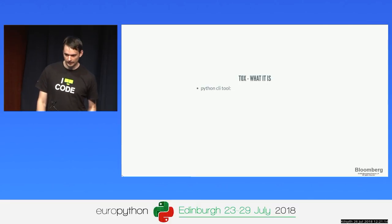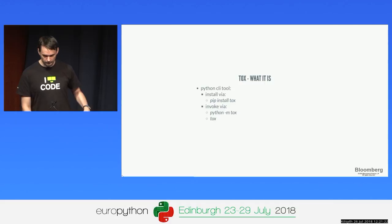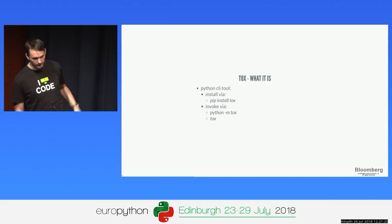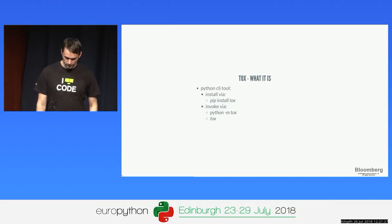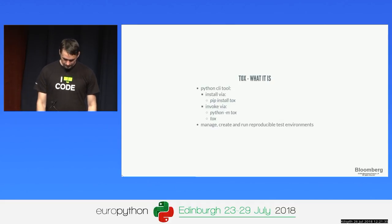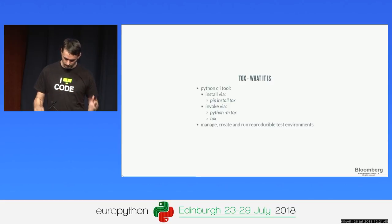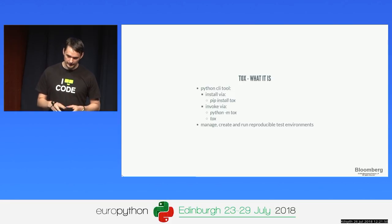Tox is basically a CLI tool. To use Tox, you just need Python and pip, then install it. You can invoke it with 'python -m tox', and it should run all the testing without you needing to remember the commands. It creates and runs a reproducible environment — it looks at your configuration and recreates a testing environment for each target exactly as you defined it.